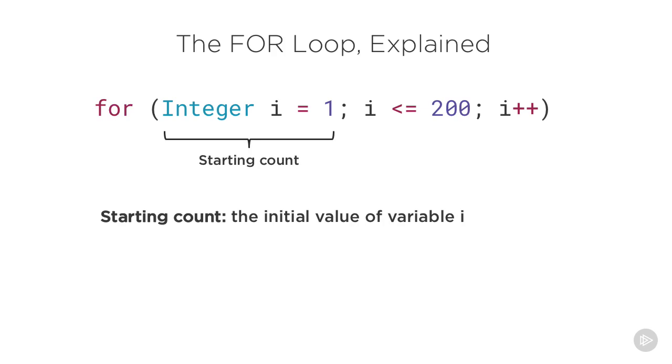In the first section, you're actually creating a variable. This variable is always an integer, and it's almost always called the letter i, which I consider short for iteration number. By the way, ignore the variable naming rules just this one time.